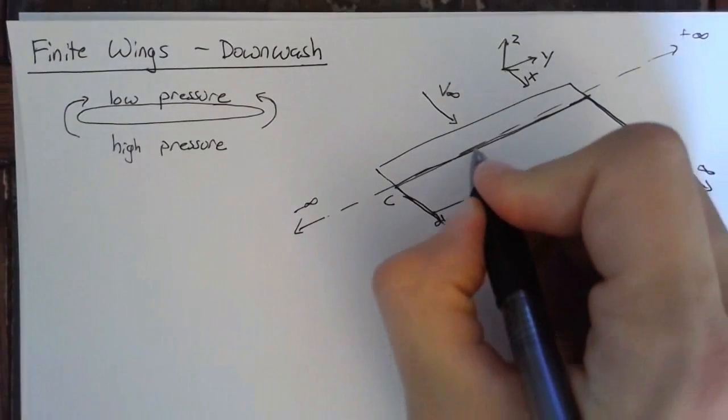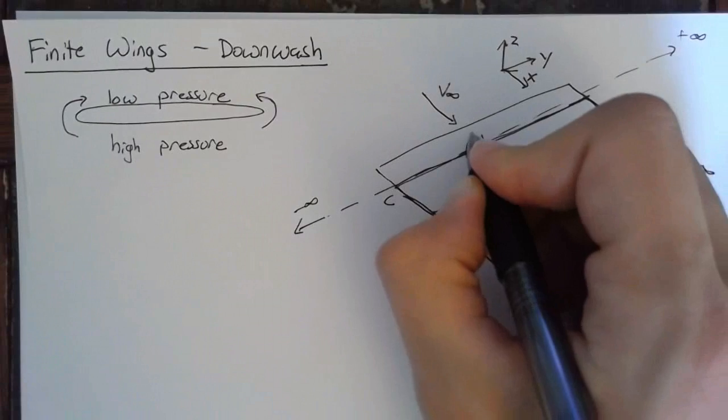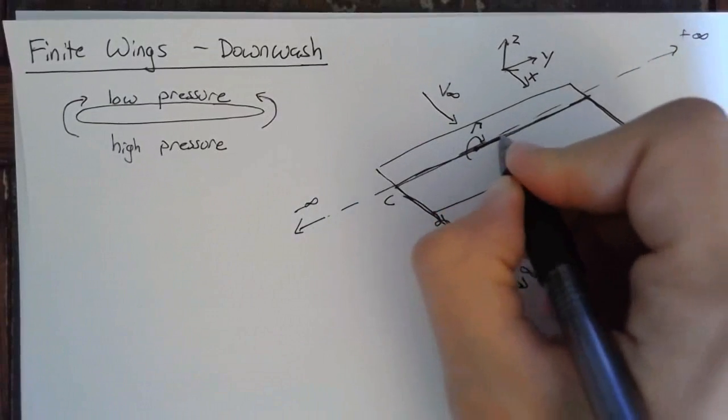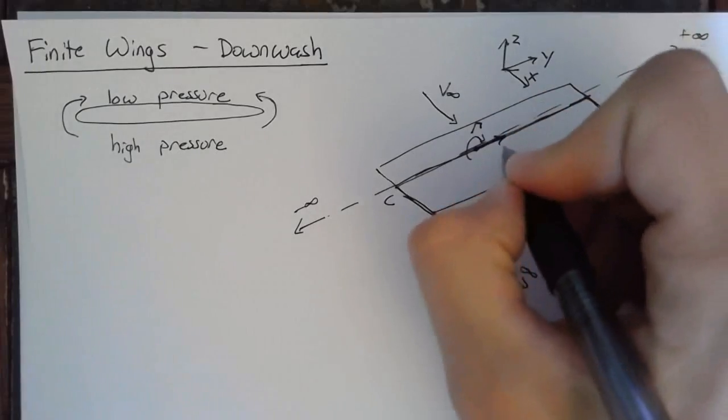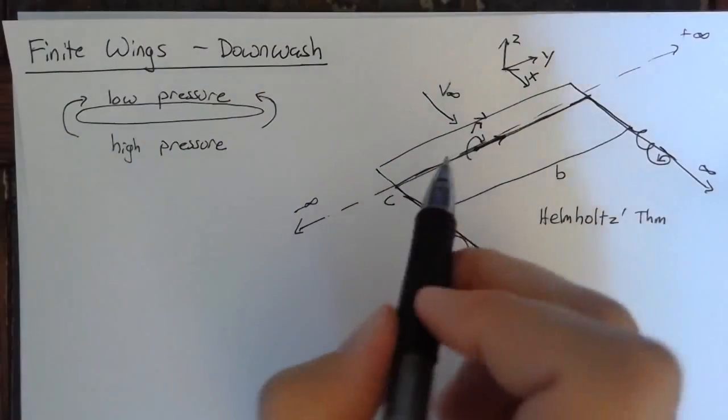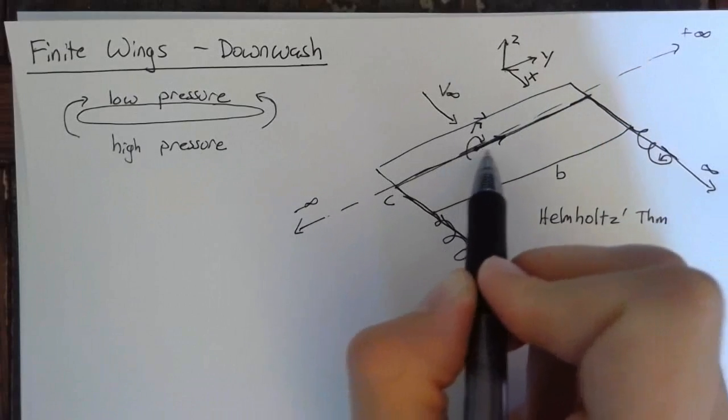Alright, so what does this actually look like? Well a vortex filament has some rotation gamma. And you can think of this as a directional vortex filament. And the gamma vector is along the length of the vortex filament. And it follows the right hand rule.